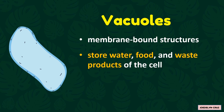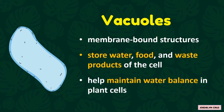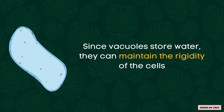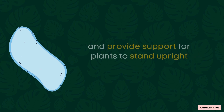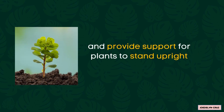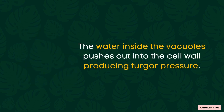They also help maintain water balance in plant cells. Since the vacuoles store water, they can maintain the rigidity of the cells and provide support for plants to stand upright. Also, the water inside the vacuoles pushes out into the cell wall, producing turgor pressure.